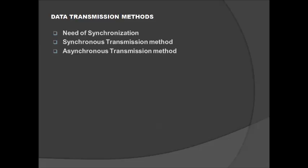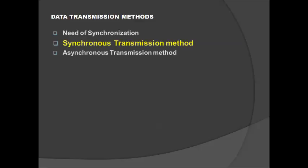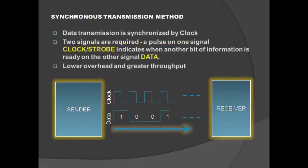The next topic is data transmission methods. First we will see the purpose of synchronization for data communication and the methods available for data transmission. When a device is required to transmit data to another device, there should be some mutual agreement between the two devices — the receiver must know how to interpret the receiving data, where the data begins and where it ends. For this purpose we need to have a synchronization method. Synchronous and asynchronous transmissions are the two different methods of transmission.